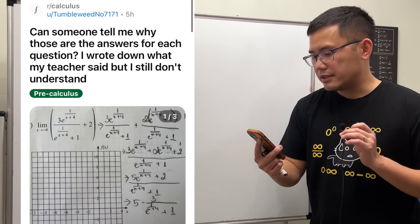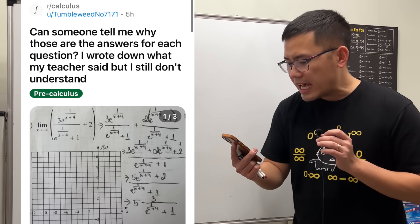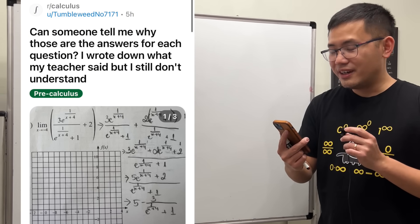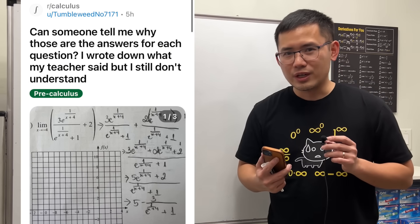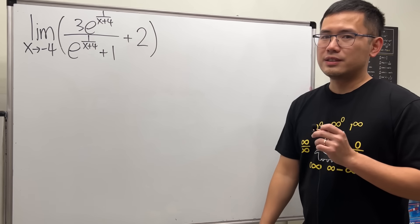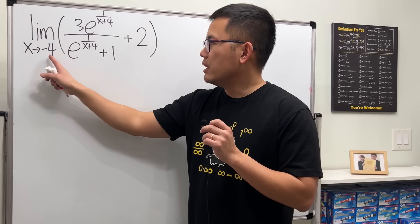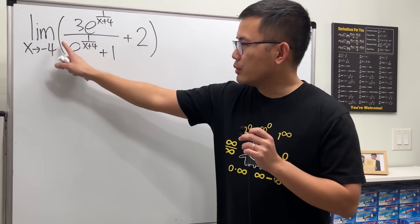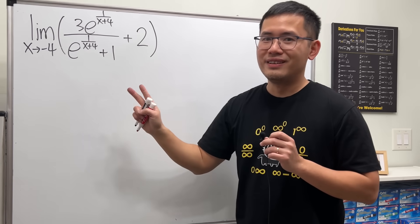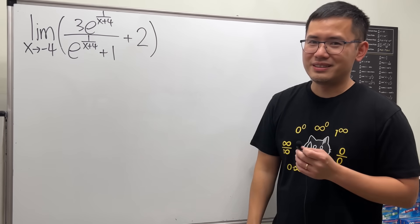Can someone tell me why those are the answers for each question? I wrote down what my teacher said but I still don't understand. We have three questions here — I'm just going to work out one of them and you can try the other two. We have the limit as x approaching negative 4, and notice there's no plus or minus, so you actually do both. Once you understand this, the other two are easier.